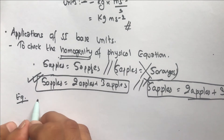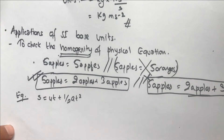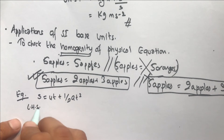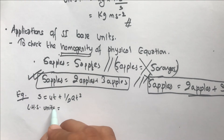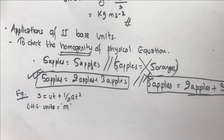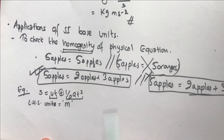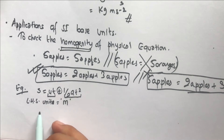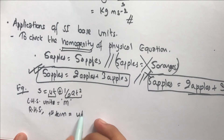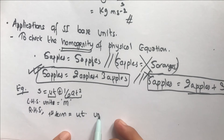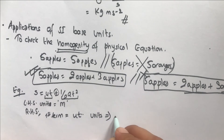Take the equation s = ut + ½at². Let's check if this equation is homogeneous. On the left-hand side, the unit is meter — the unit of distance. Since there is a plus operation, both terms on the right must also have the unit meter. The first term is ut: velocity u has unit meters per second, and time t has unit second.